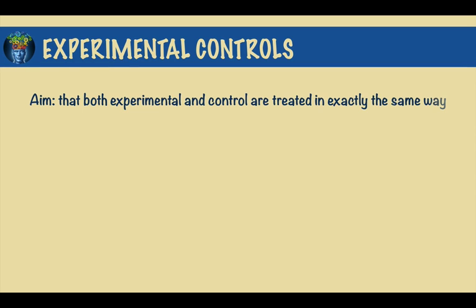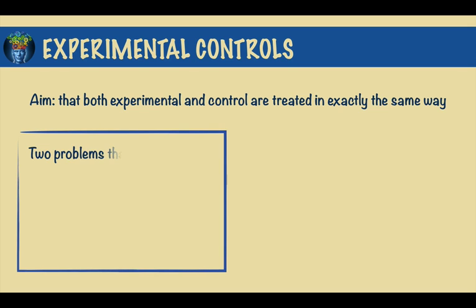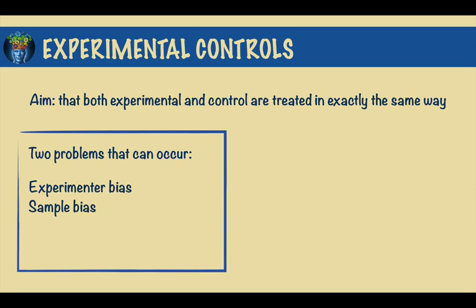Since the scientific method consists of carrying out a carefully controlled investigation, certain controls are put in place so that both experimental and control groups are treated in exactly the same way, with the exception of the independent variable. This is due to two common problems that can occur: first is experimenter bias, and second is sample bias.